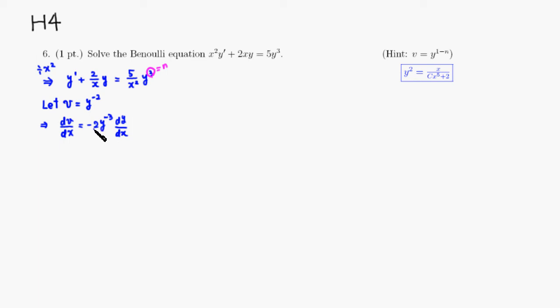So in order to create dv over dx, we have to have this guy right here, so we try to create it by, take this guy, the original equation here, and then multiply by this guy right here. So we're going to multiply by negative 2 y to the negative 3.